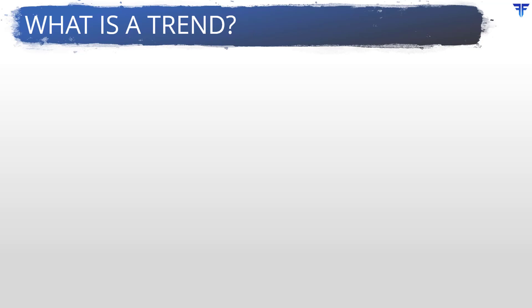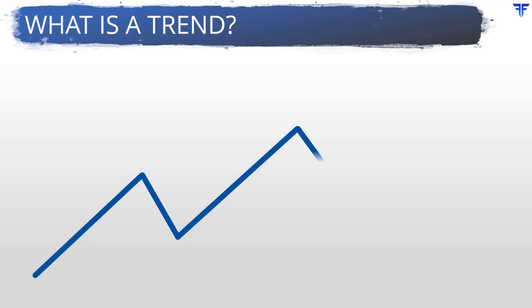But first things first — what exactly is a trend? Put it in the simplest of words, a trend is the general direction in which the price of the security is moving. Depending on the timeframe chosen, the magnitude and the importance of a trend varies. Have a look at this chart. Can you notice that the price in general is moving higher? Well, this is nothing but the trend. In this particular case, we say that the price is trending higher.